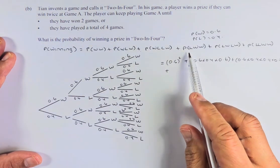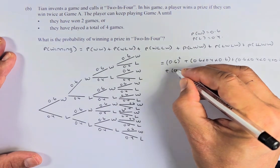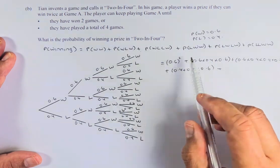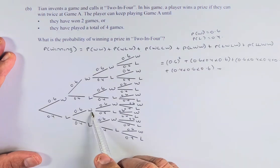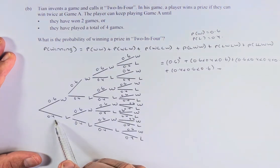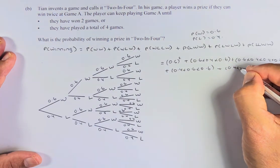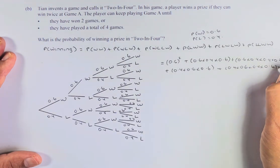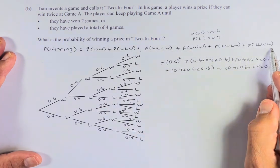The next one is lose-win-win. Whenever you have 2 wins, you already win. So 0.4 times 0.6 times 0.6. Next possibility is lose-win-lose-win. You lose first, you win, then you lose and you win. So it's going to be 0.4 times 0.6 times 0.4 times 0.6. So we have 1, 2, 3, 4, 5. We're going to the last one.